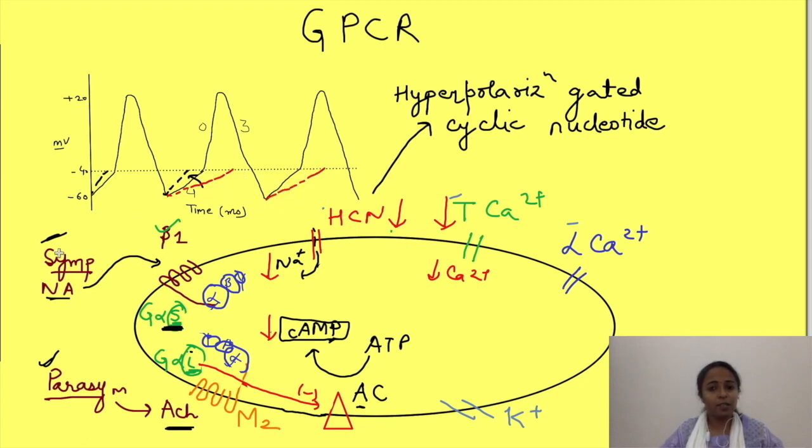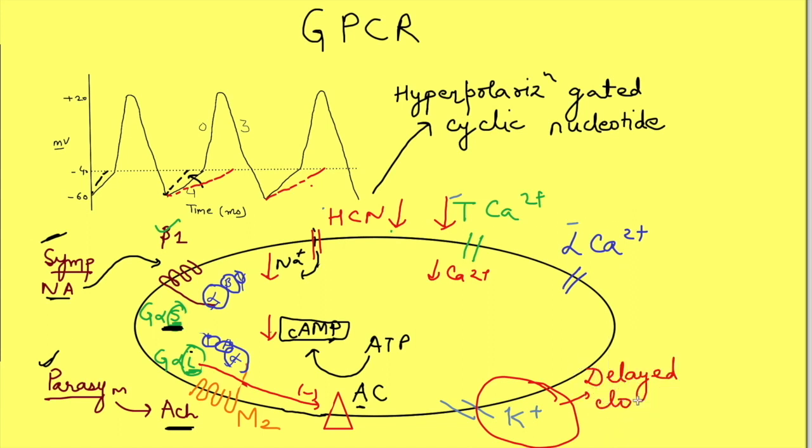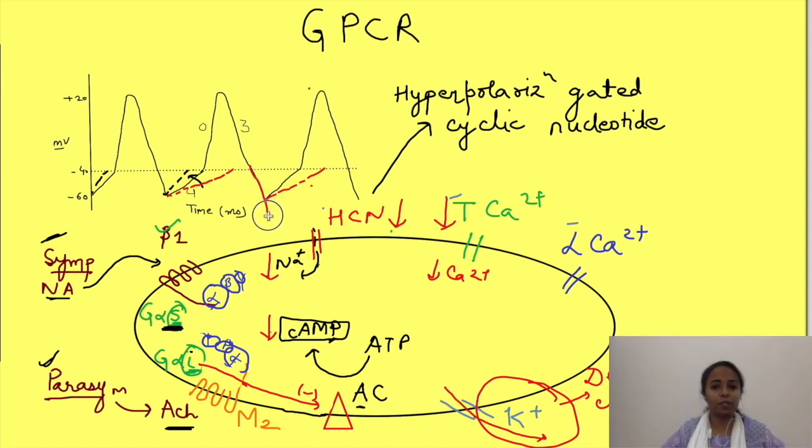So what it will cause? It will result in the decrease in the number of impulses generated and hence decreased heart rate. Now parasympathetic activation has one more effect. It delays the closure of these potassium channels which are responsible for phase 3. So more potassium moves out which leads to hyperpolarization, that is more negative maximum diastolic potential. See, since it is more negative now, the voltage change required to reach to the threshold is more. So it will take more time.